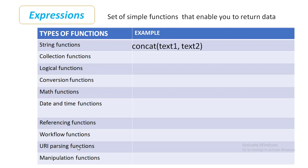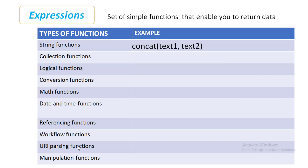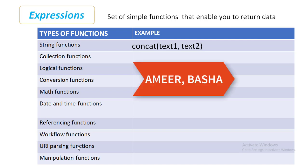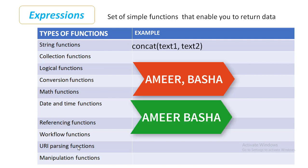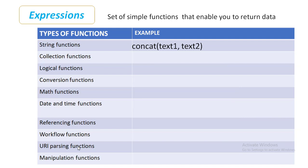For example, I'm having concat(text1, text2). In simple words, if I'm having a first name and a last name and I want to concatenate these two things to display as a full name — let's say the first name is Amir and the last name is Basha — I want to get the full name by concatenating these two strings using the function called concat. The output will be Amir Basha. This is the string function.